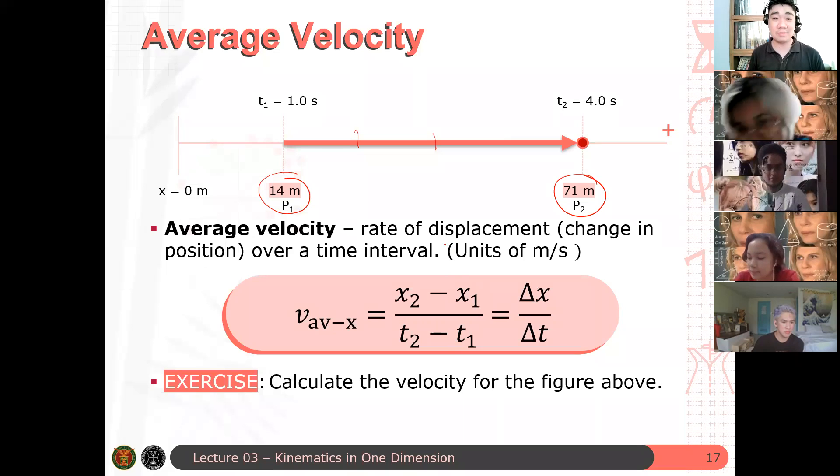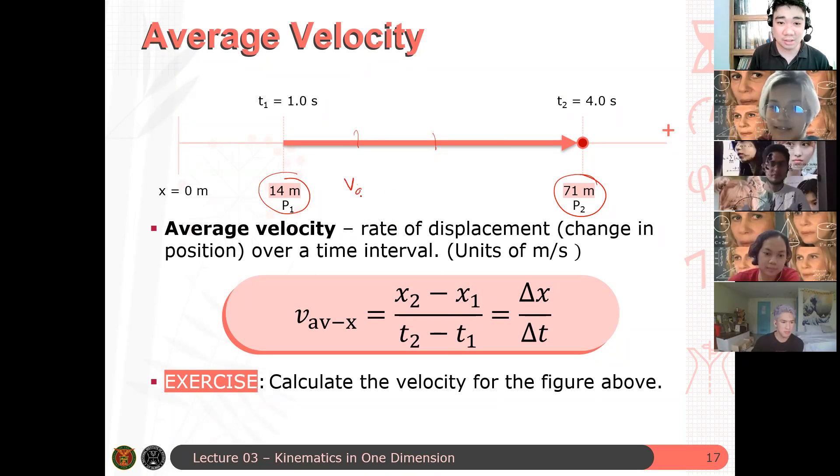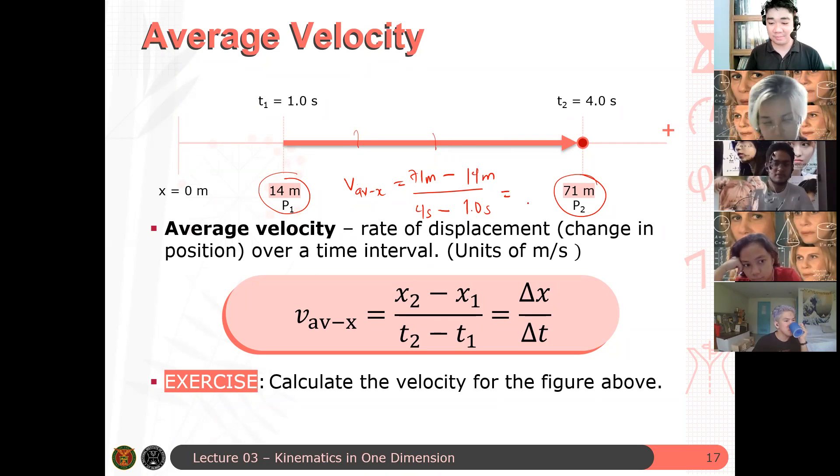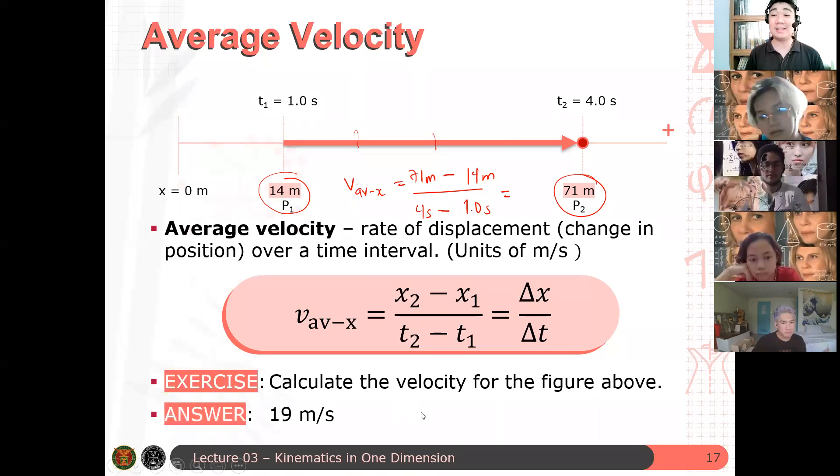Let's calculate the velocity of this figure. So basically, we just need to substitute the quantities. So V average X is just equal to the final position, 71 meters, minus the initial position, which is 14 meters, all over the final time, which is 4 seconds, minus the initial time, which is 1 second. And we get something like 19 meters per second. So that's the answer.